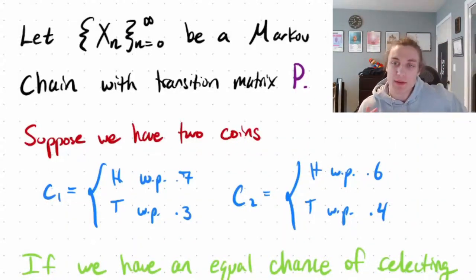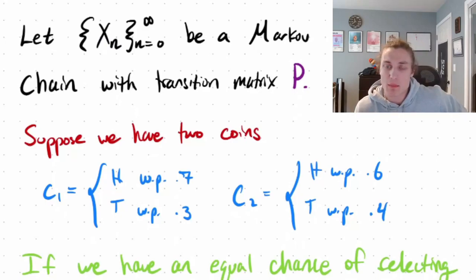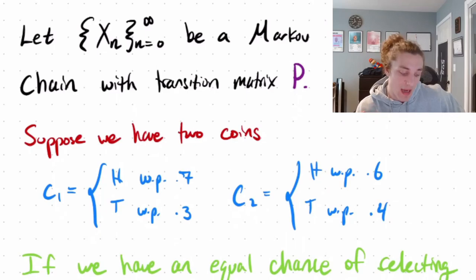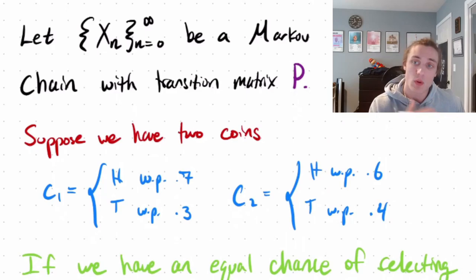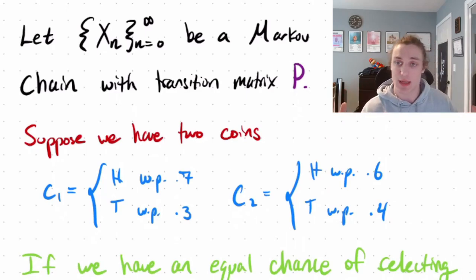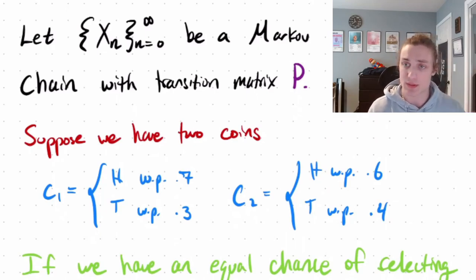Welcome back. Today we're going to talk about the Chapman-Kolmogorov equations for a discrete, homogeneous, or stationary Markov chain — one where time is independent of the process. In other words, the transition from time 1 to 2 or time 20 to 21 is equivalent. We are agnostic to the time dimension, and each transition probability is equivalent. That's what it means to be homogeneous, to be stationary.